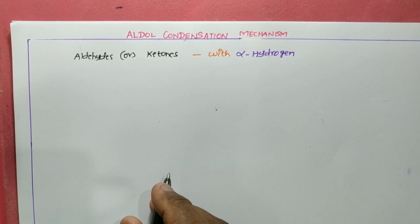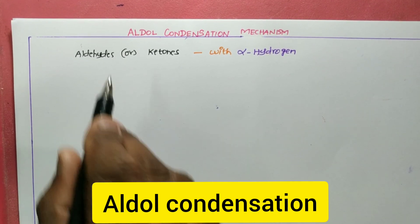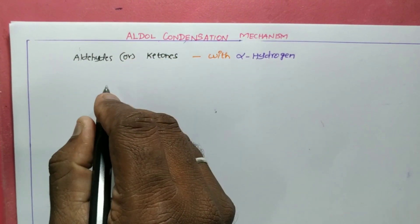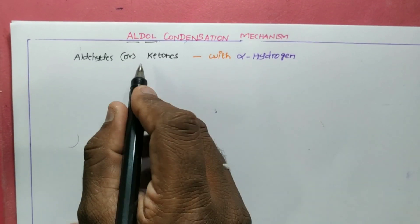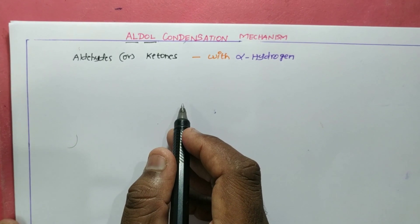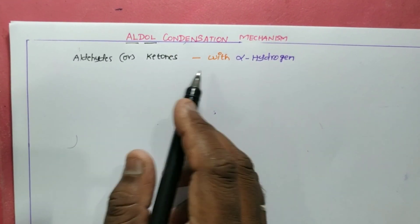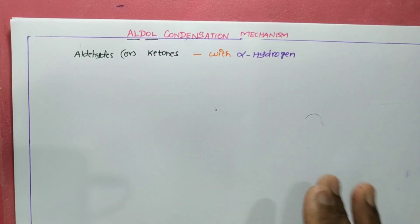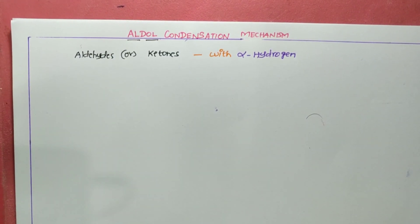Welcome to our channel. Today we are going to talk about the important mechanism of aldol condensation. The word 'aldol' itself comes from aldehydes and alcoholic functional groups — aldehyde with alcohol. Condensation means eliminating small molecules; that is what a condensation reaction is.